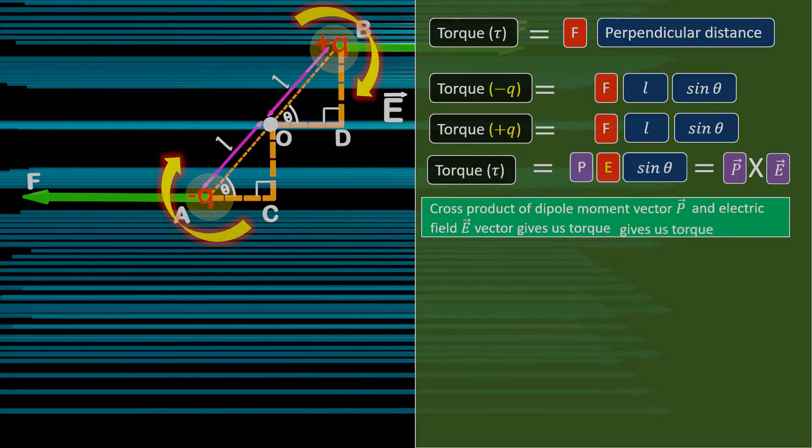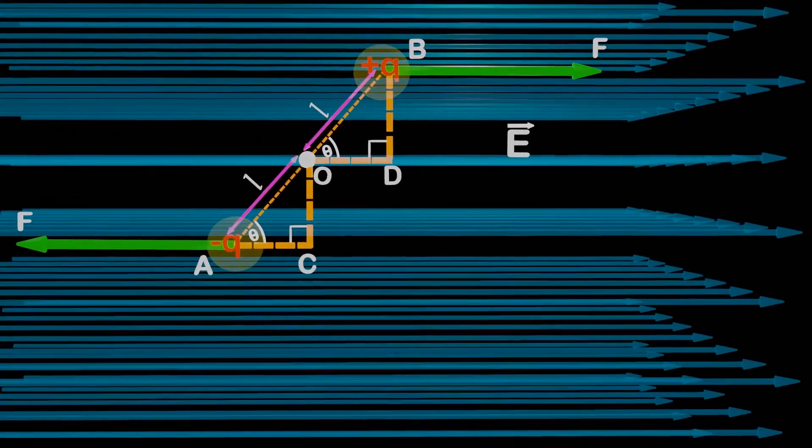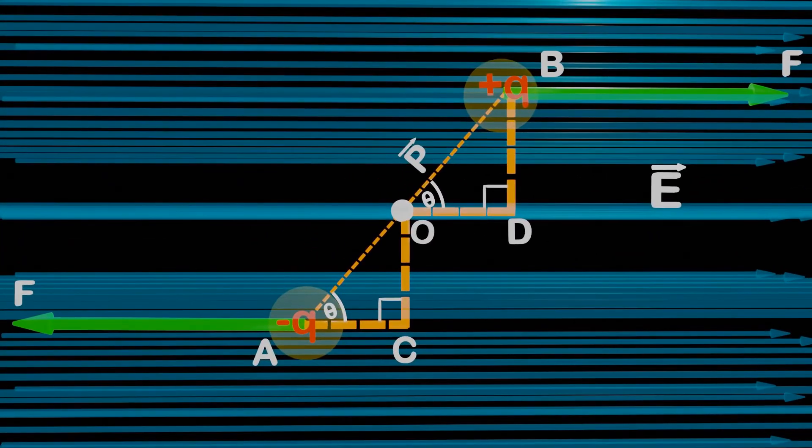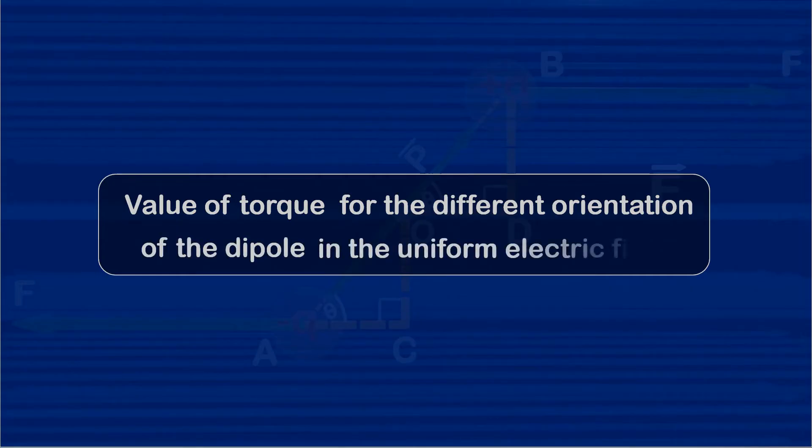It is important to note that torque, electric field and dipole moment are all vector quantities. In the previous video, we learnt that the direction of dipole moment will be taken from the negative charge towards the positive charge. Now let's understand the value of torque for the different orientation of the dipole in the uniform electric field.